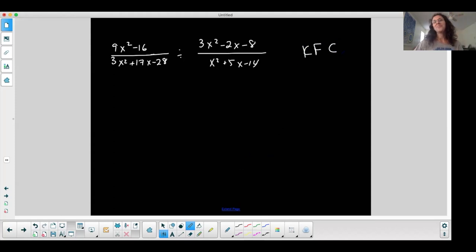And I'm going to KFC it. I'm going to keep the first the same. So let's keep it, right? 9x squared minus 16. I'm not changing it. I'm copying it down. 3x squared plus 17x minus 28. I'm going to flip the second one. So it becomes the reciprocal, which means the bottom goes on top. The x squared plus 5x minus 14 on top. And now the 3x squared minus 2x minus 8 on the bottom. So I had to keep the first, flip the second, and then change to multiplication and then do what I do when I multiply.